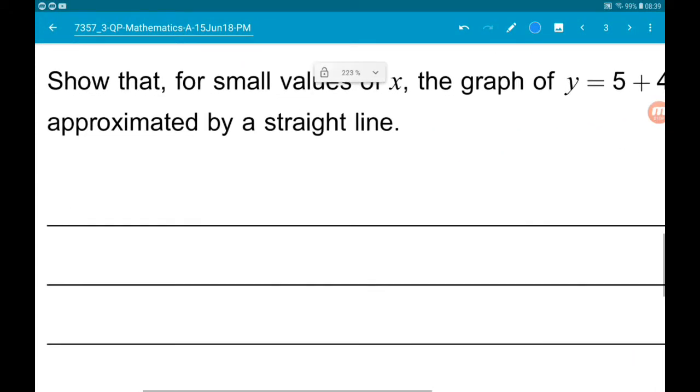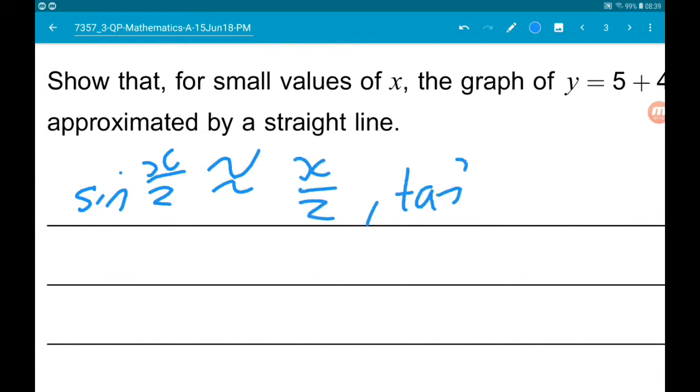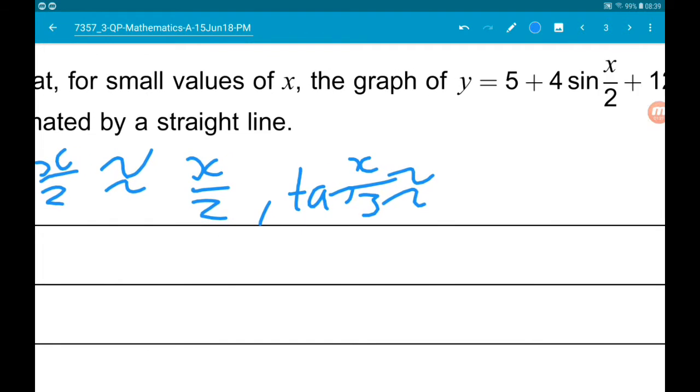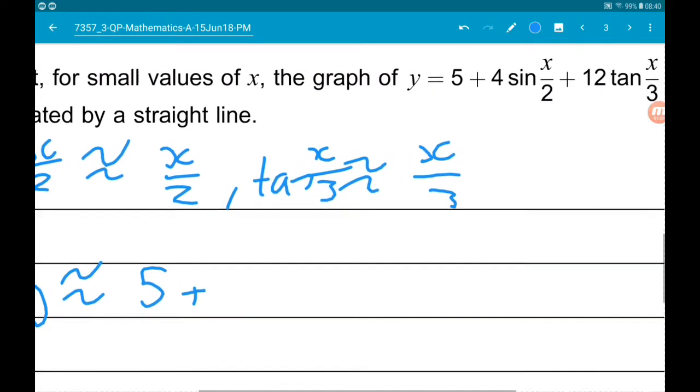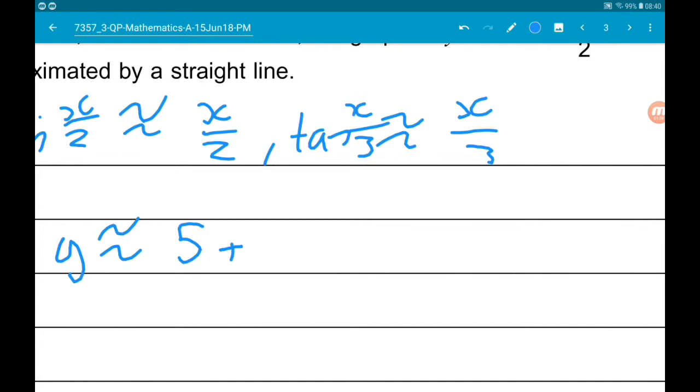We know that sine of x over 2 is approximately x over 2, and tan of x over 3 is approximately x over 3. So we can say that y is approximately 5 plus 4 lots of x over 2 plus 12 lots of x over 3.